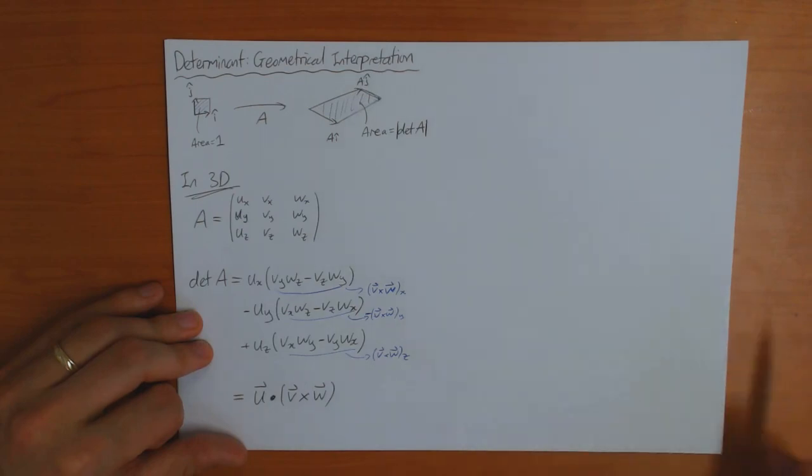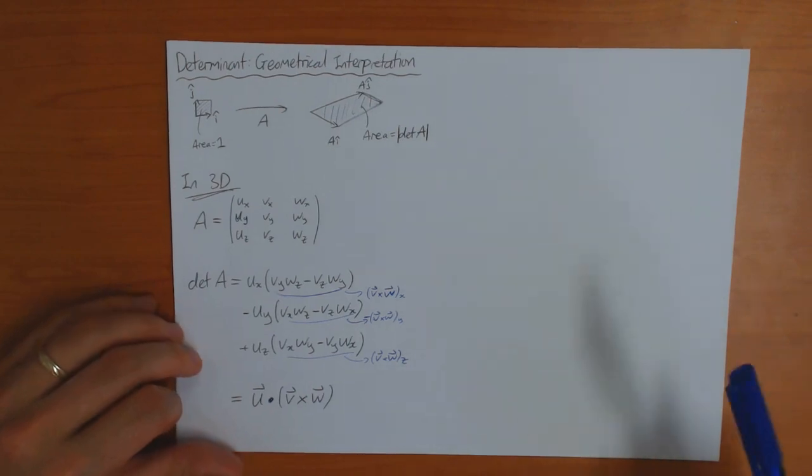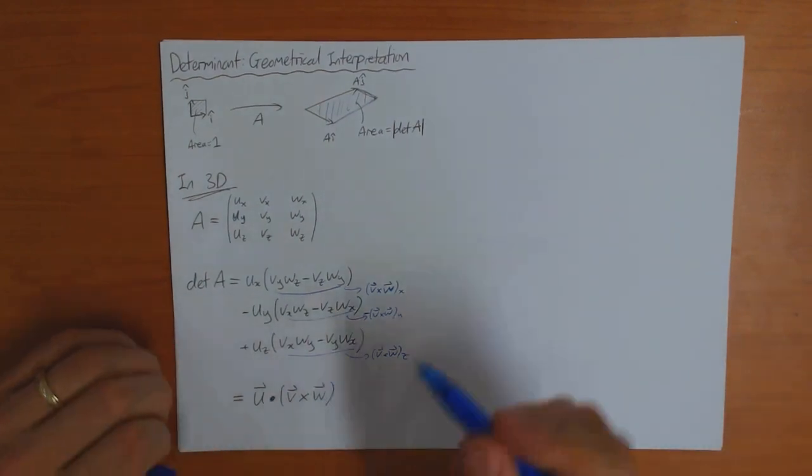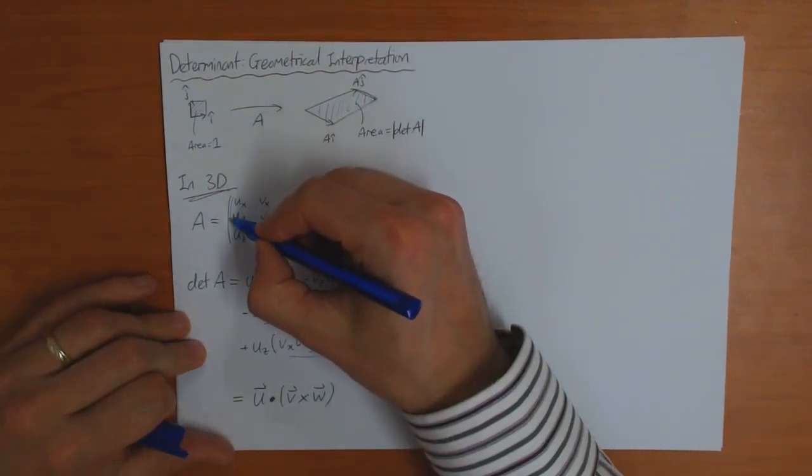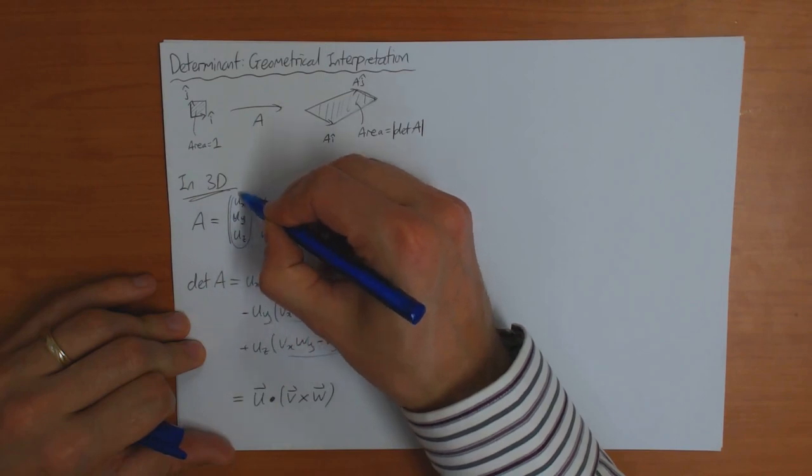And this is significant. You can use this to calculate the determinant. But this also has, as I say, a geometrical significance because, as I said in the very first video on matrices,